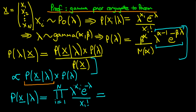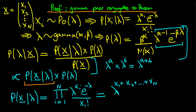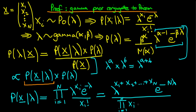If we multiply out this product, this is equivalent to lambda to the power x1 plus x2 plus all the way up to xn — because lambda to the power a times lambda to the power b equals lambda to the power a plus b. Then for the exponential, e to the minus lambda appearing n times becomes e to the power minus n lambda. The denominator is the product from i equals one to n of xi factorial, but we can forget about that since it doesn't contain lambda.